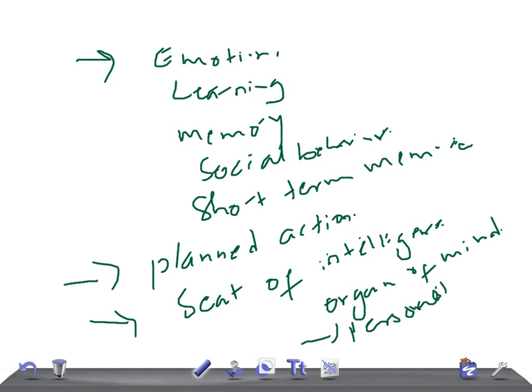The prefrontal cortex is responsible for various autonomic changes during emotion because it's connected with the hypothalamus and the brainstem. These are the important functions of the prefrontal cortex.